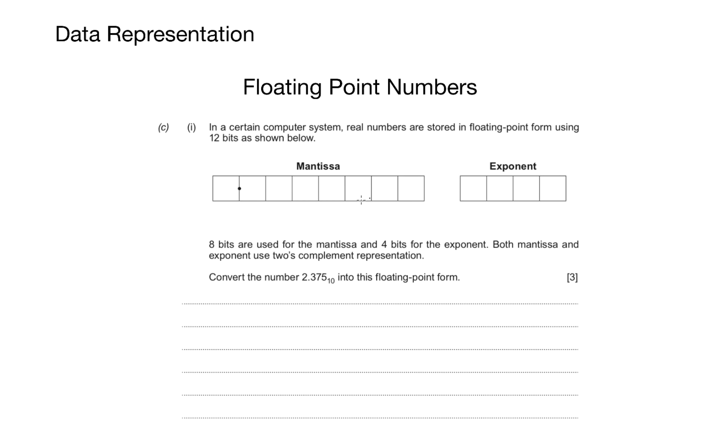In this question it asks: in a certain computer system, real numbers are stored in floating point form using 12 bits as shown below. Eight bits are used for the mantissa and four bits are used for the exponent. Both the mantissa and exponent use two's complement representation. Convert the number 2.375 into floating point form.